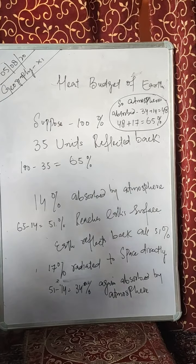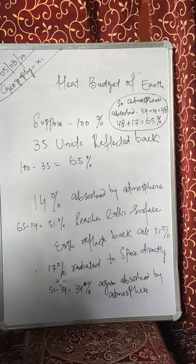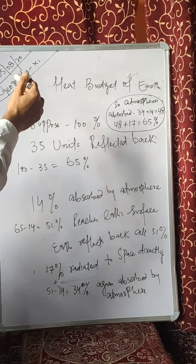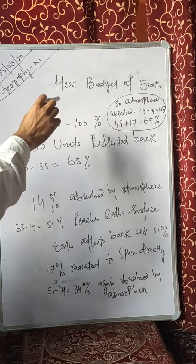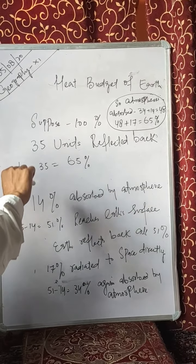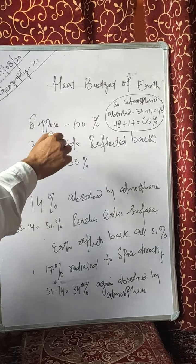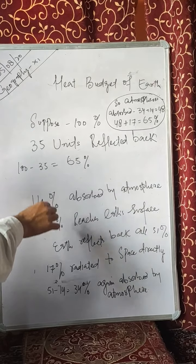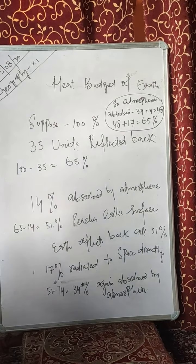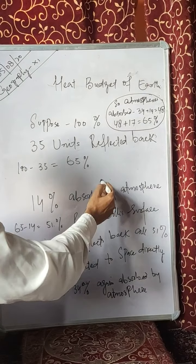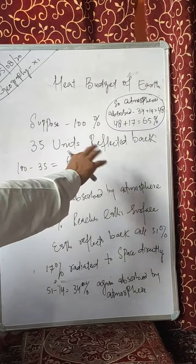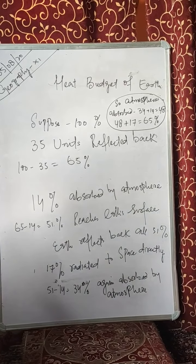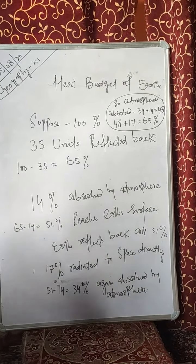How is this balance maintained? Let us assume that the insolation received by the earth's surface is 100% at the top of the earth's atmosphere. This 100% has to reach the earth's surface, and in order to do so, it has to pass through the earth's atmosphere.